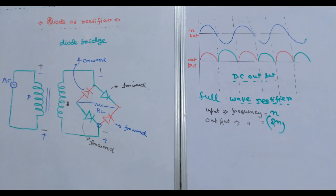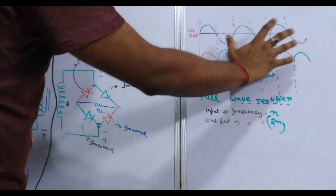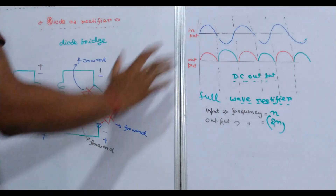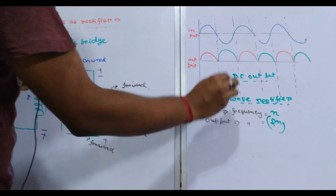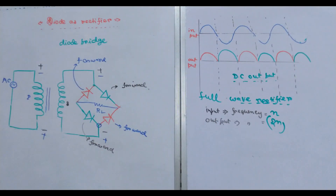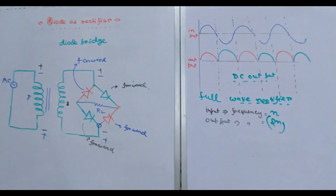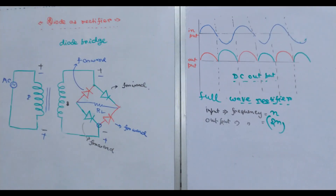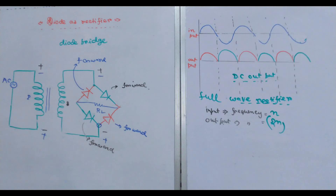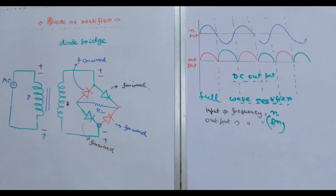This criteria is going to be repeated several times. The output of the diode bridge takes in this process. Remember that the diode bridge is obviously a full-wave rectifier. This is the input frequency N and the output frequency of the output. That's all we need to know about diode as a rectifier. This is very easy for you. Next video — till then stay home, stay safe.